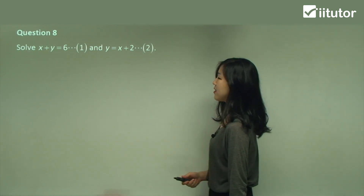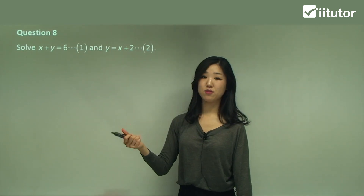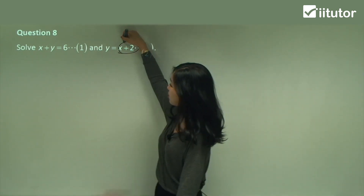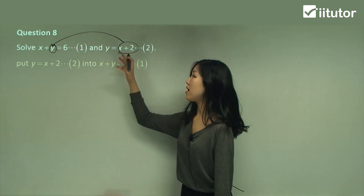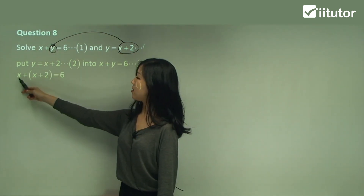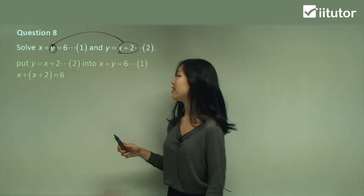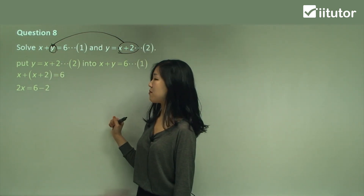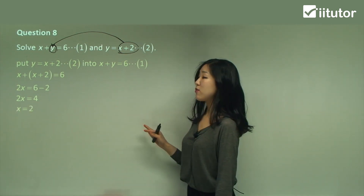Let's try another one — Question 8. Equation one is x plus y equals six, and equation two is y equals x plus two. In equation two, y is the subject. So I'm going to substitute that into the first equation in the position of y. So: x plus (x plus two) equals six. We no longer have any y's. Gather like terms — x plus x is 2x. Move the two over, making it minus two. Six minus two is four. Divide by two and get x equals two.